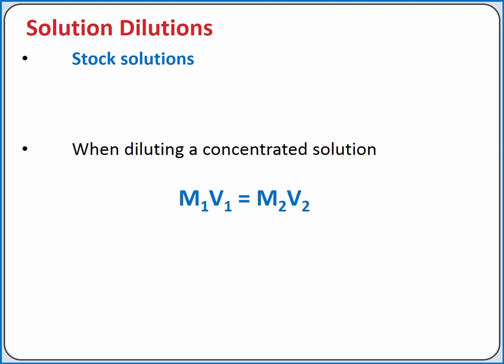Many chemicals are stored in concentrated solutions called stock solutions for the purpose of taking up less volume. For example, hydrochloric acid may be stored in a 12 molar stock solution. For an actual experiment, you may not want 12 molar hydrochloric acid, so you may need to prepare a dilute solution from a concentrated solution.